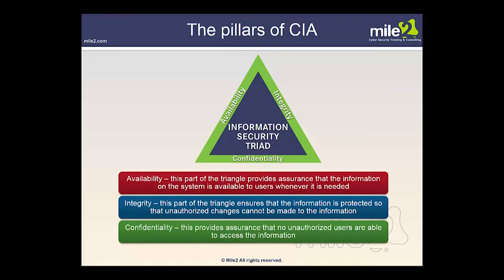Many times integrity is implemented through hashing algorithms such as MD5 and SHA-1. There's also confidentiality — making sure that no unauthorized users are able to access the information or read it. Without confidentiality, we could expose trade secrets or private health information.